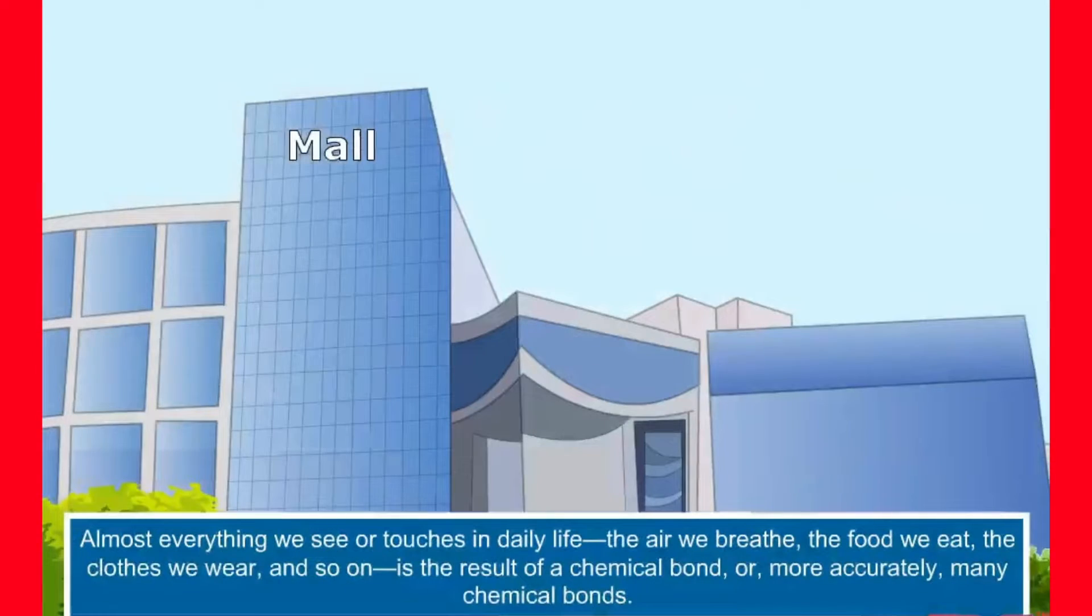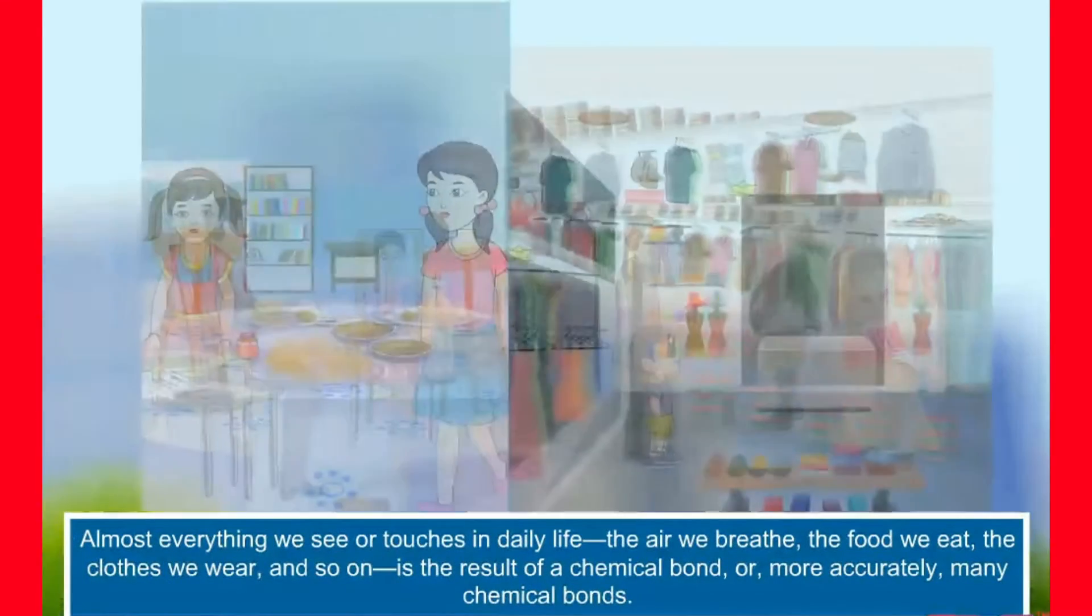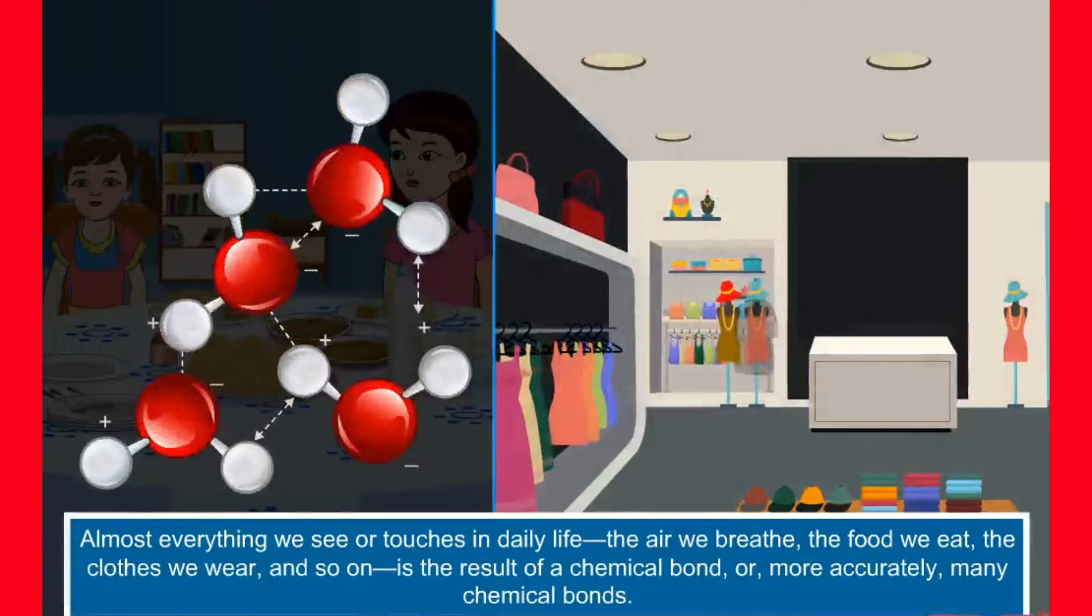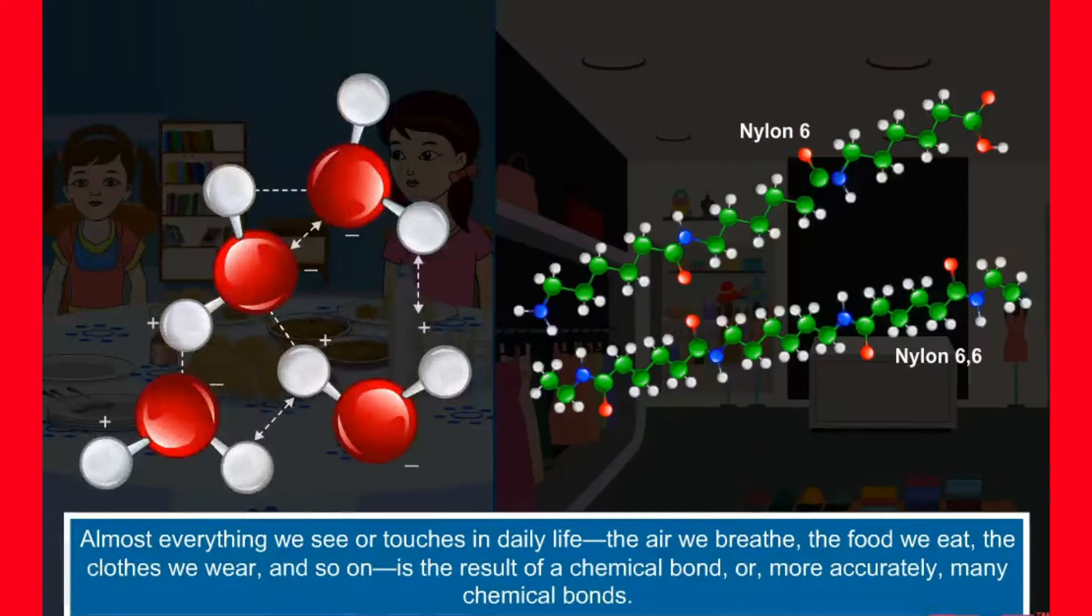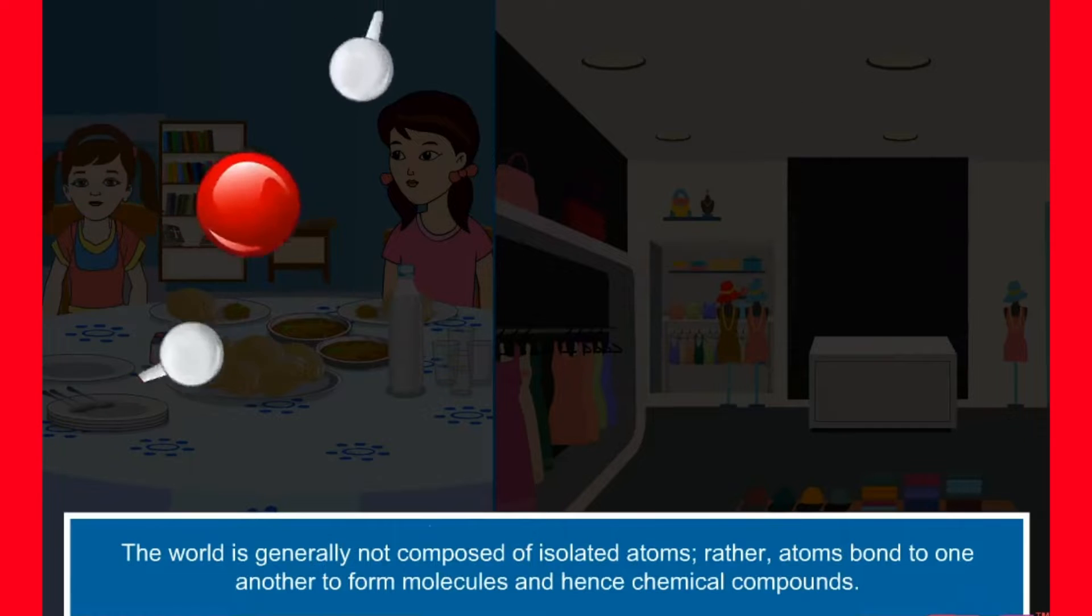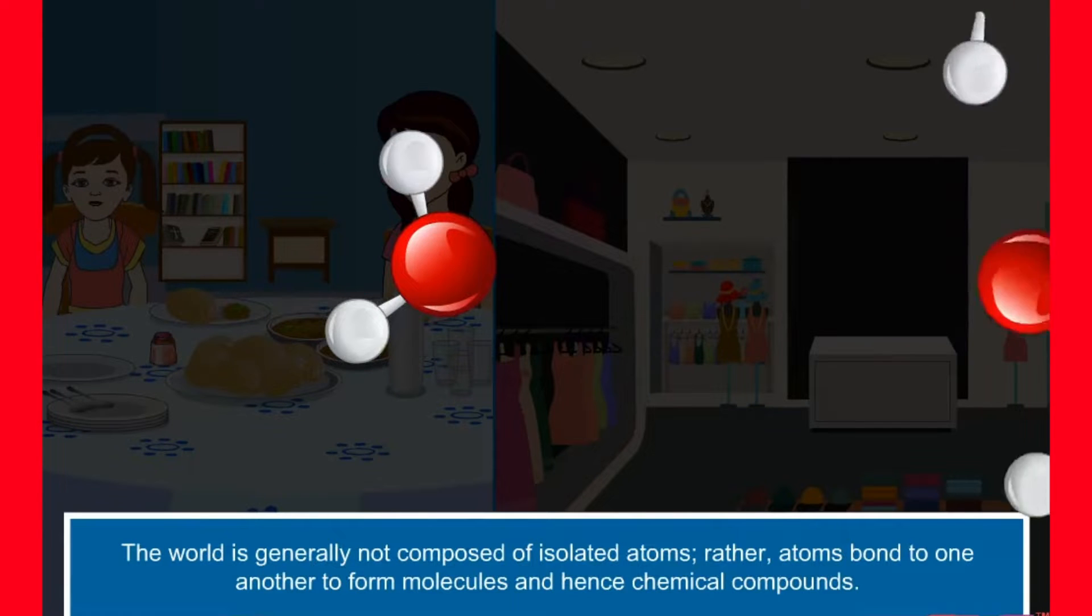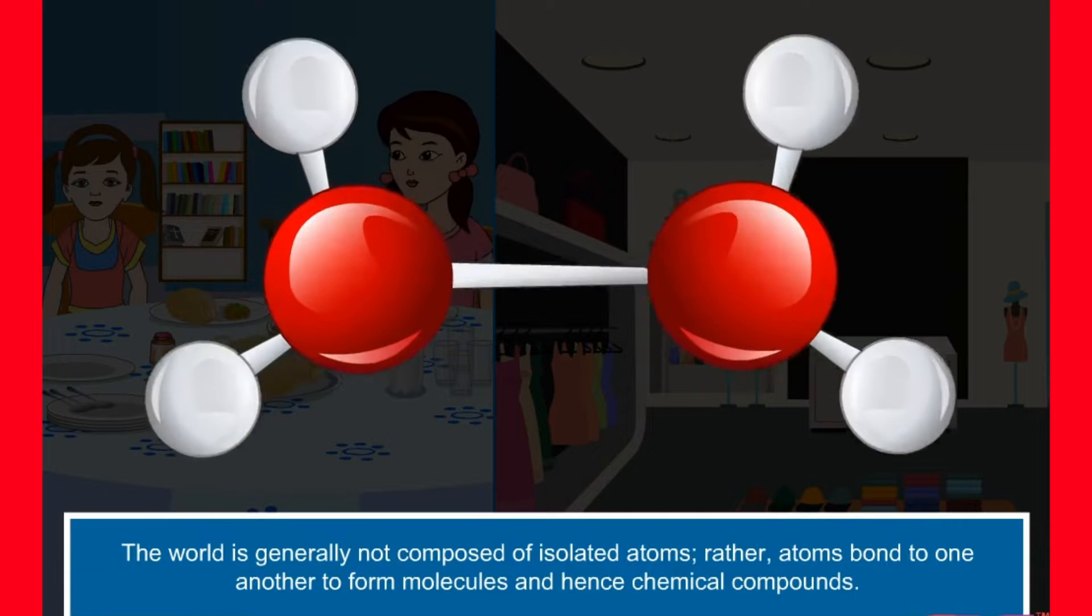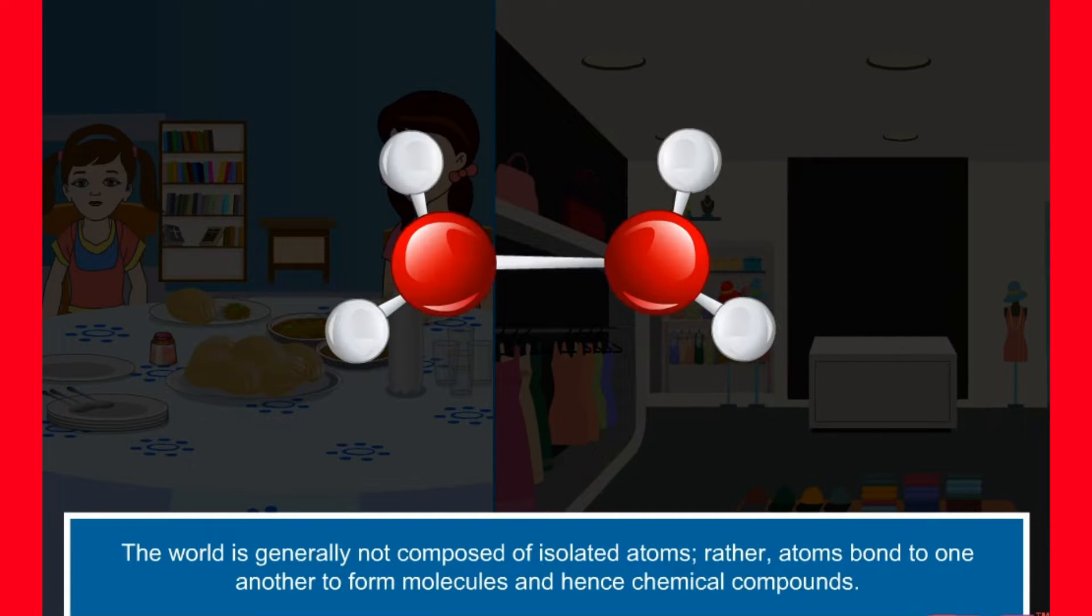Almost everything we see or touch in daily life, the air we breathe, the food we eat, the clothes we wear and so on, is the result of a chemical bond or more accurately many chemical bonds. The world is generally not composed of isolated atoms, rather atoms bond to one another to form molecules and hence chemical compounds.